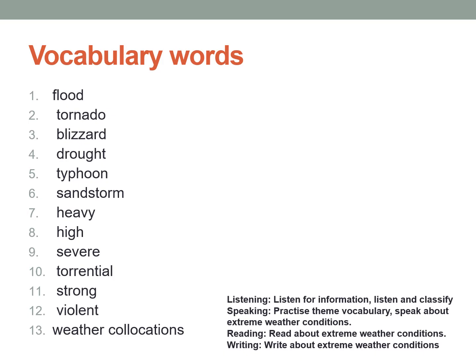These are the vocabulary words: flood, tornado, blizzard, drought, typhoon, sandstorm, heavy, high, severe, torrential, strong, violent — weather collocations. Blizzard means with the snow — too much snow like this. And torrential means very severe, heavy rainfall.